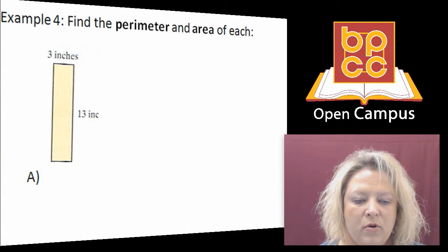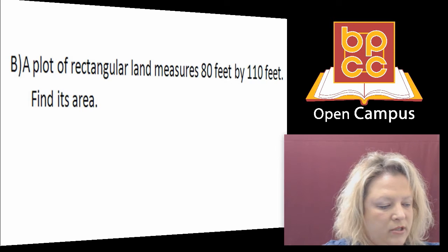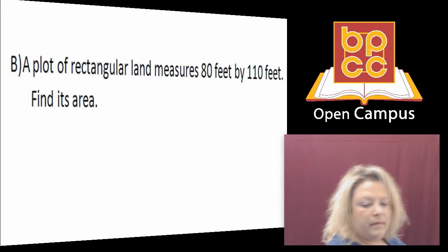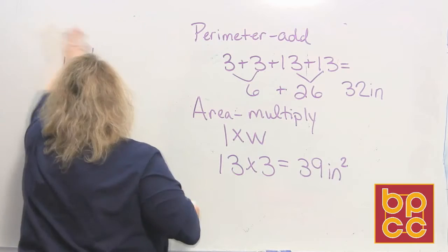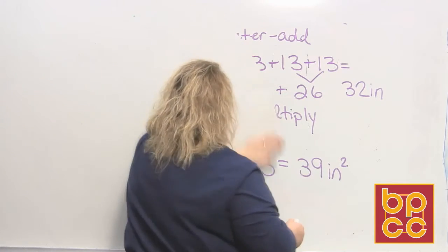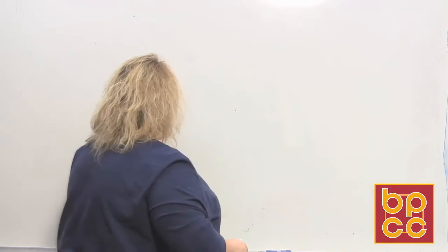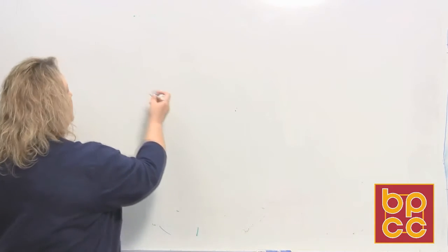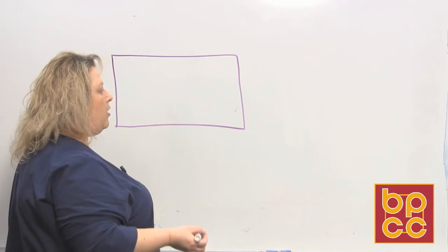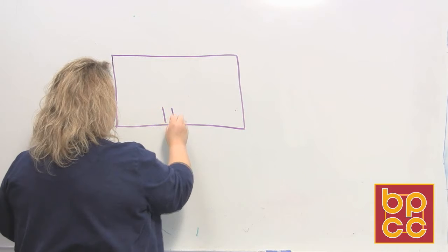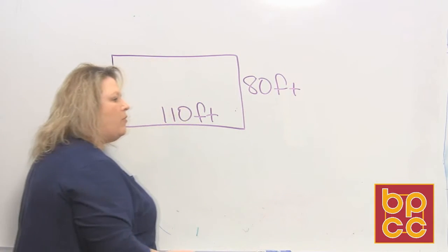Now there's one more question we're going to do, and that is talking about a plot of land. I'm going to draw that on the board. It's always good when you're doing a word problem to draw an example so that it's easier to visualize what you're talking about. The plot measures 110 feet by 80 feet, and the question asks: what is the area?